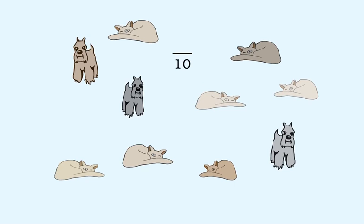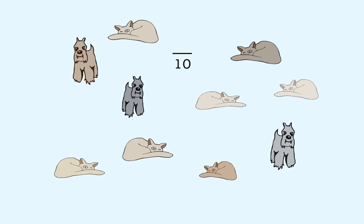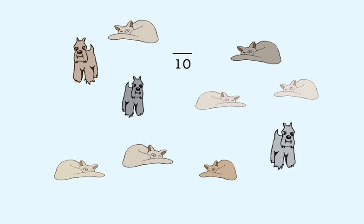The parts are each of the pets. Seven of the pets are cats, so the numerator is seven. So seven-tenths of the pets are cats.